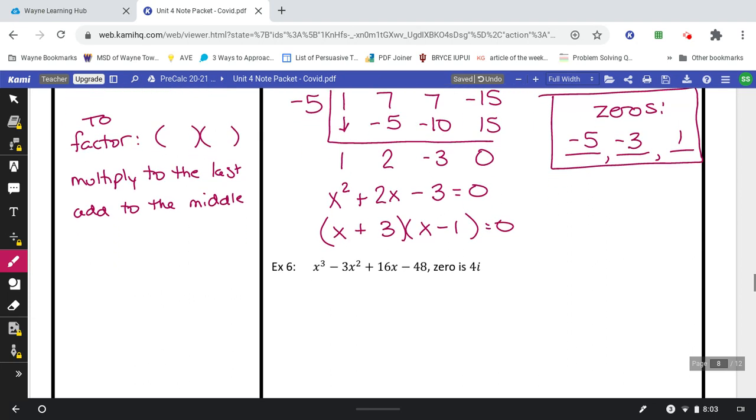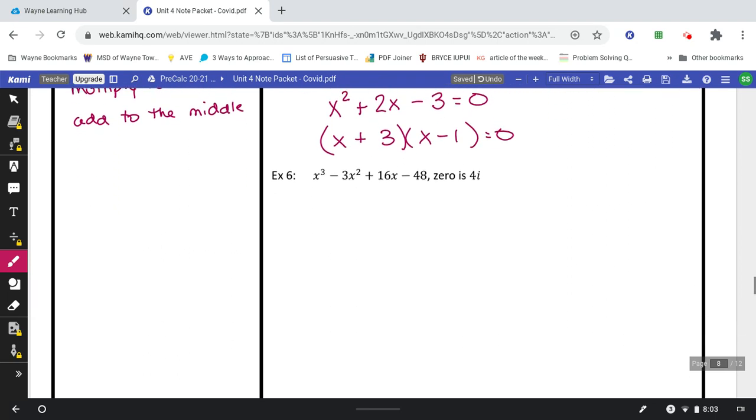Example number 6. This is actually going to be a little bit more work because it gives us a zero as 4i, an imaginary number. So when we set this up with 4i, it's important that you give yourself plenty of space in between each of our numbers that we have in our division. So my zeros are 4i, and I know there are going to be 3 of them again because of that 3.